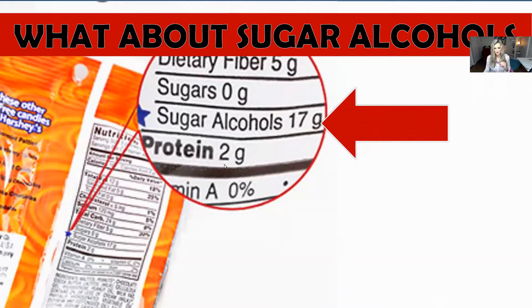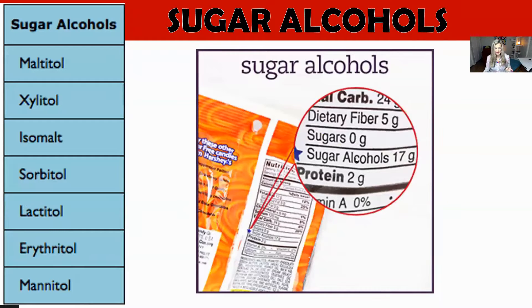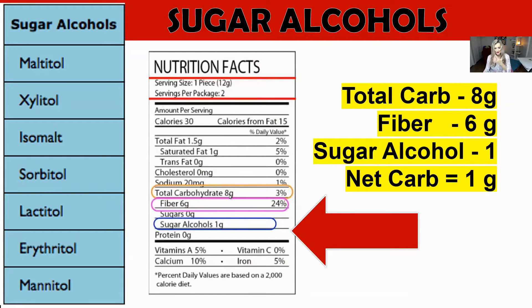There's one more thing in the net carb calculation: sugar alcohols. You'll see them listed on a label. Sugar alcohols are substitutions for sugar, and common ones include maltitol, xylitol, isomalt, sorbitol, lactitol, erythritol, and mannitol. When calculating net carbs, the industry also wants you to deduct sugar alcohols from the total. So if a label has 8 total grams of carbs, fiber is 6, and sugar alcohol is 1, your net carb is 1, not 8.